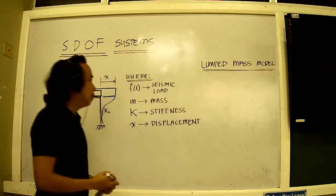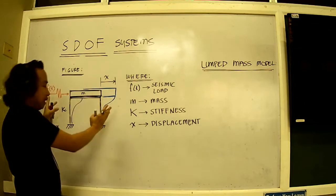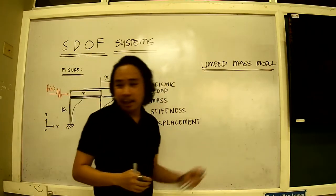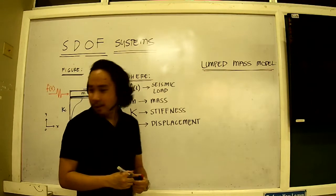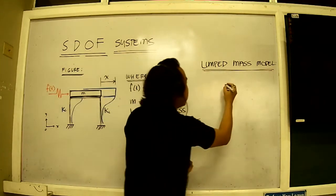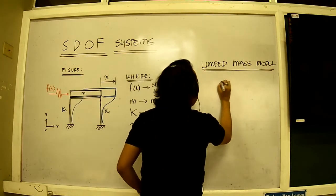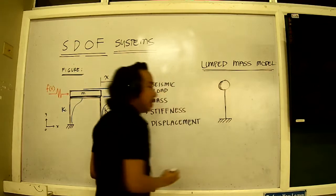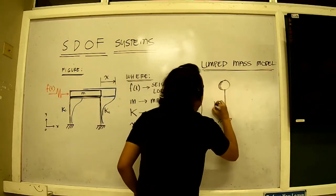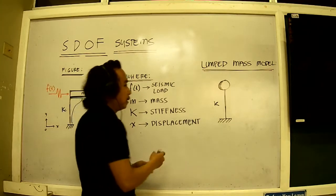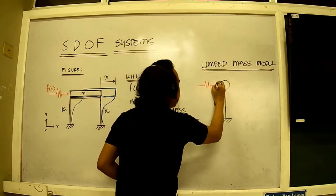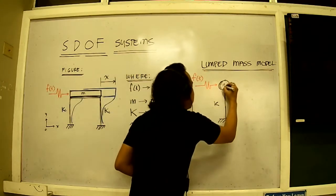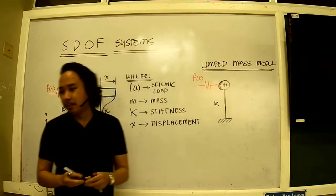This is the lumped mass model. Now, what we would like to do with the lumped mass model is that we will try to convert this structure here into a more simple equivalent system, but basically the same principle. It still has the same stiffness K, and also it's still subjected to the same seismic load, which is defined as FT. It still contains the same mass and basically has the same properties.